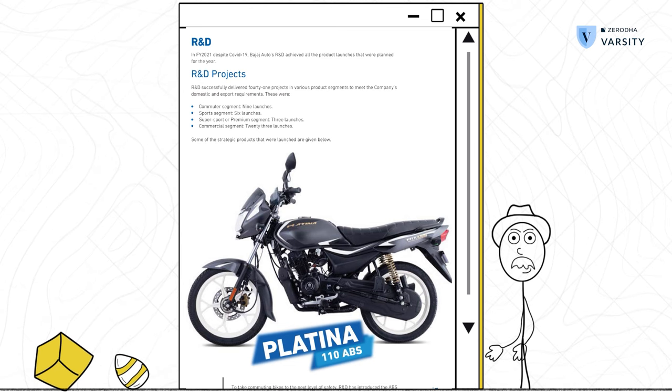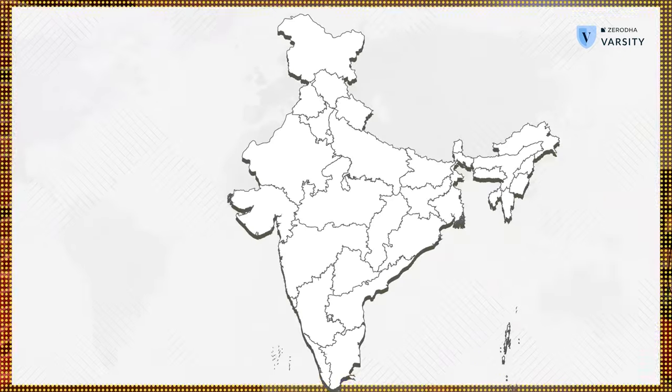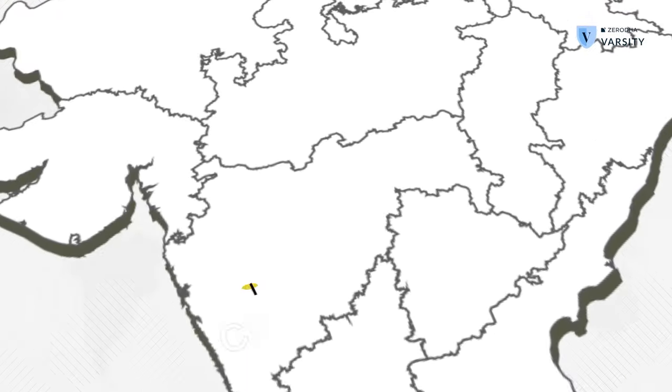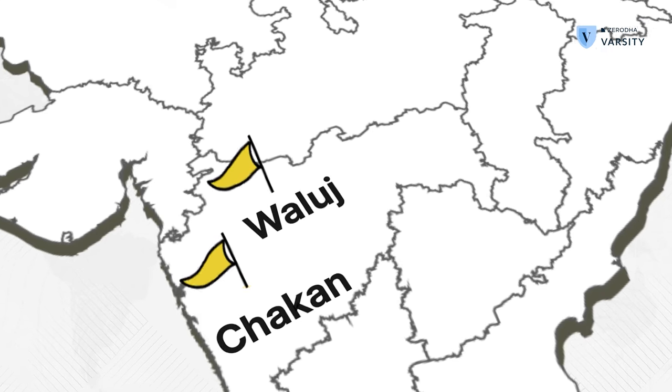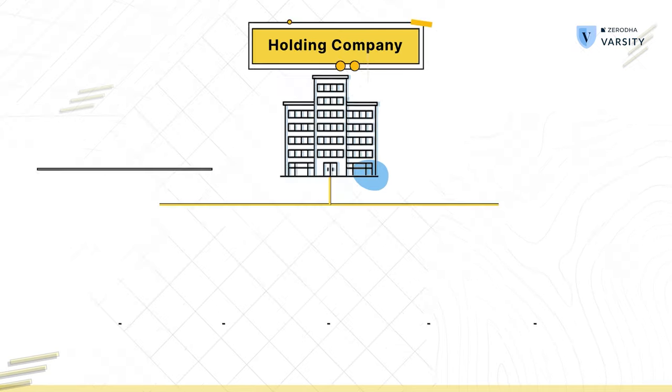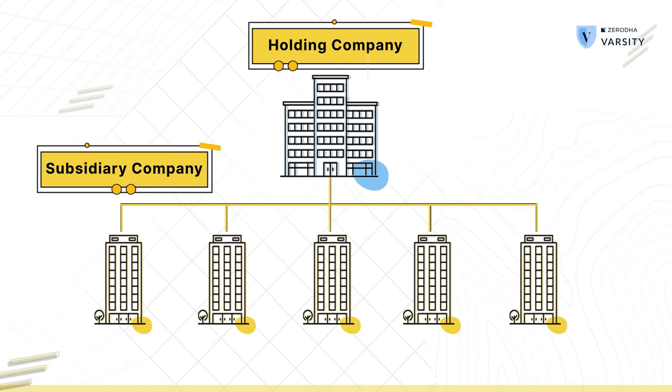If it is a manufacturing company you are looking at, the annual report will also have information about all the plants it has. This information will come in handy when you're trying to calculate the capacity utilization of those plants. The annual report also gives you a list of all the subsidiaries the company has, which gives you a sense of all the sectors it operates in and the geographies it is present in.